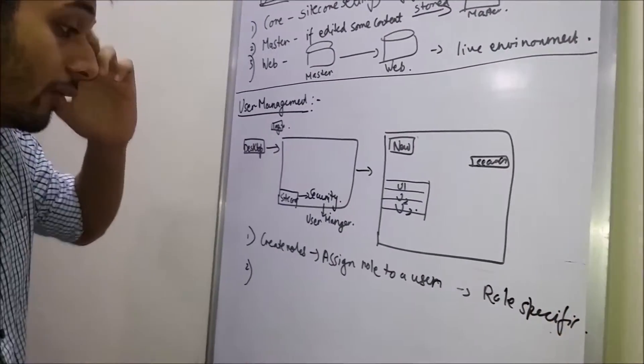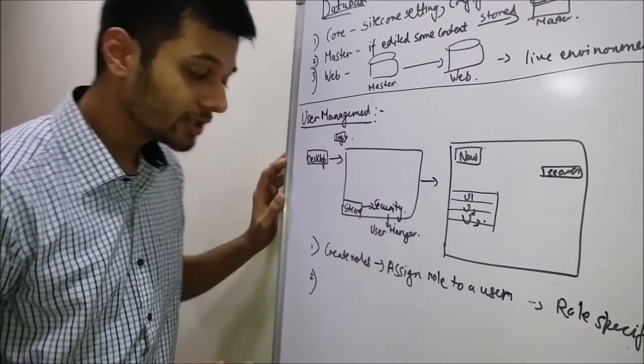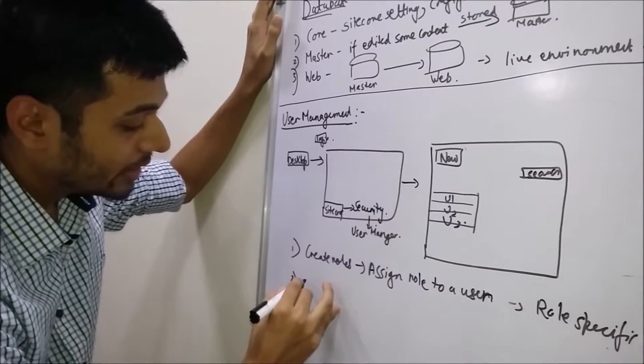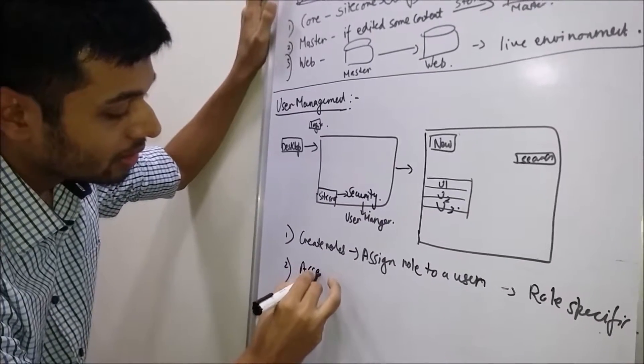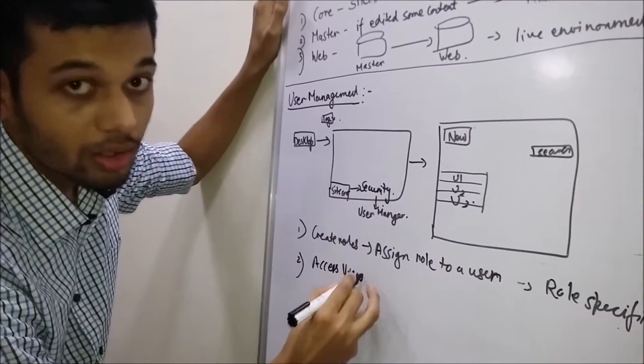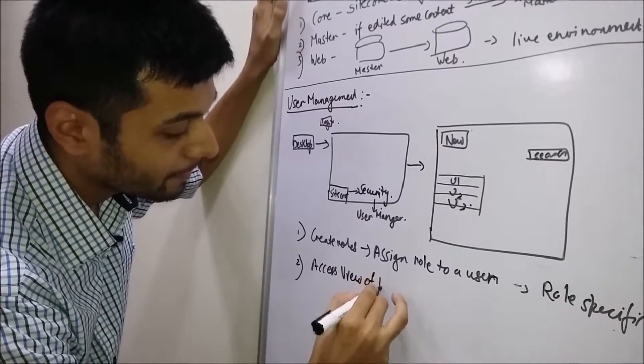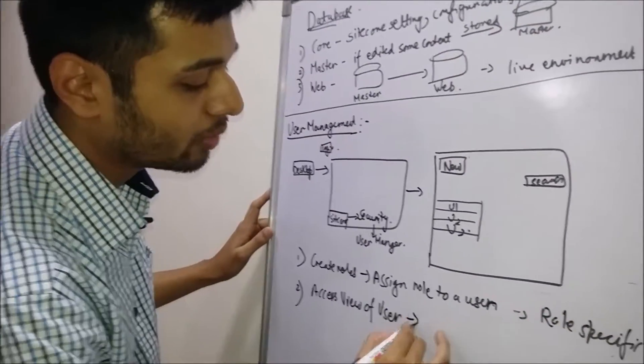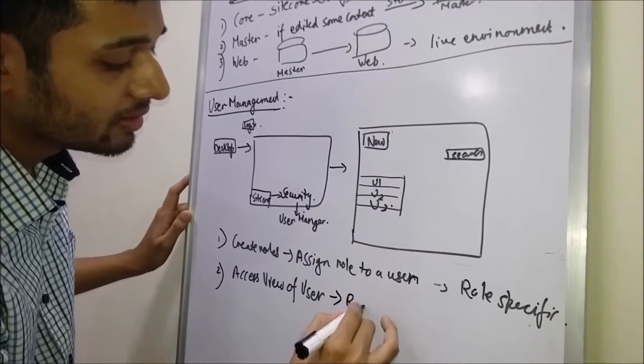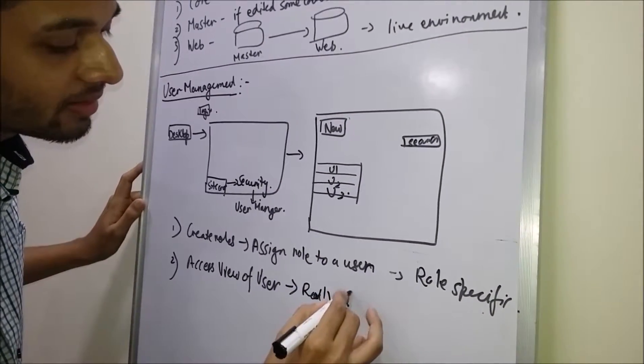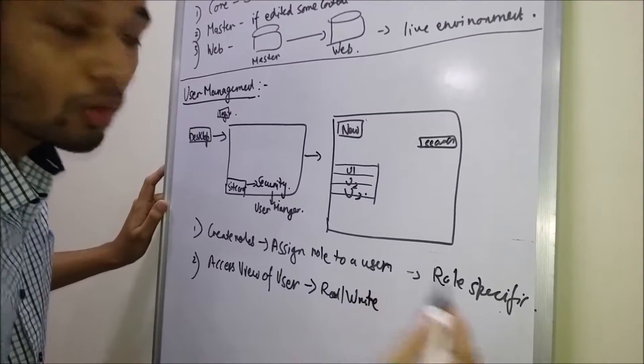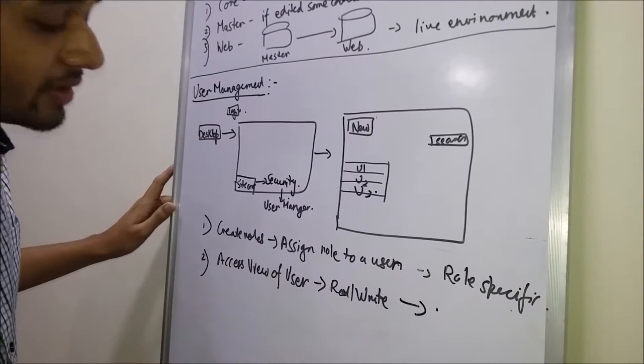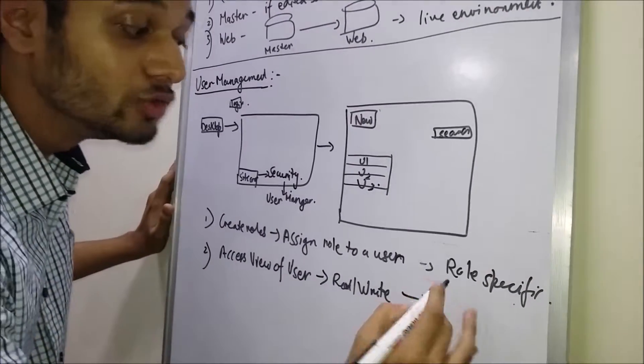There's another way where we can give access to this user. We can give the access to the user at user level, like we can directly go to the access viewer of that user and directly change the rights, whatever rights you can give, like read, write, and so on. So we are giving the access rights to this user at user level.